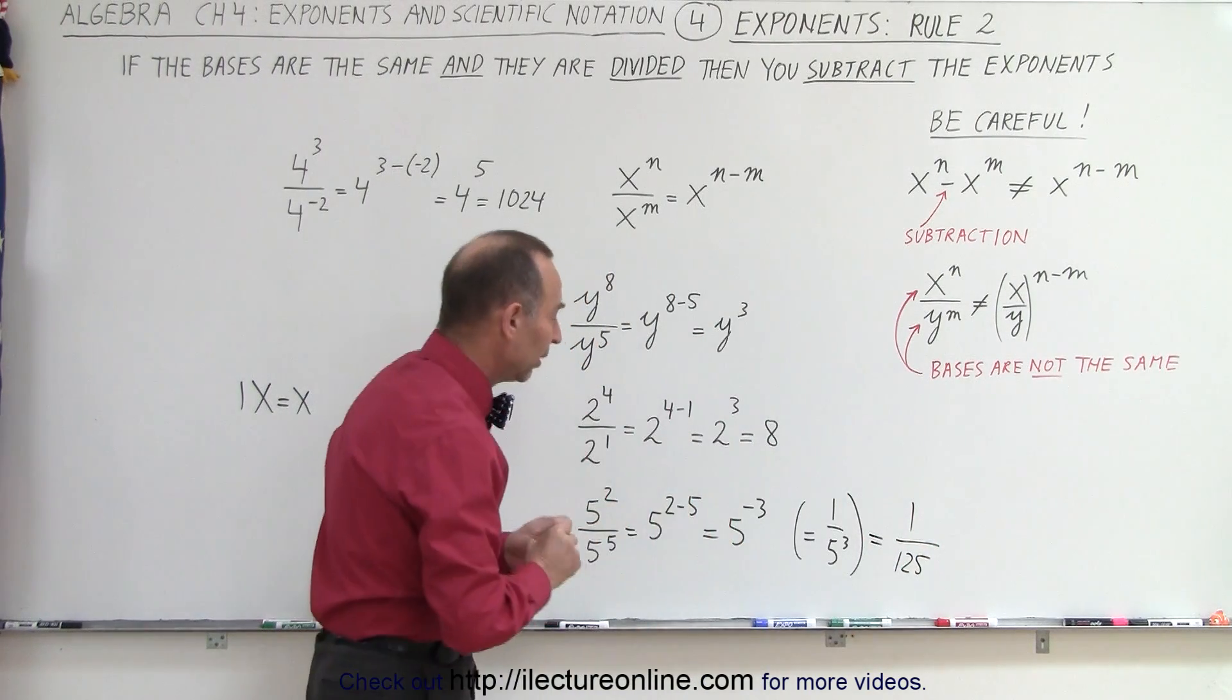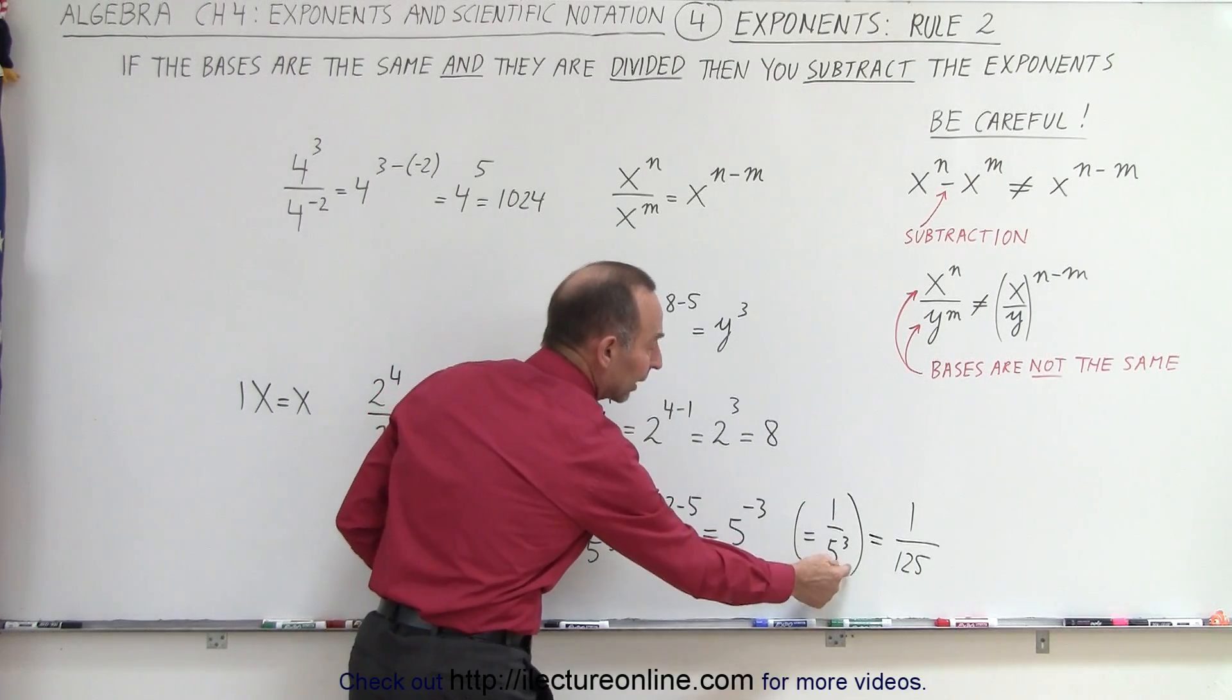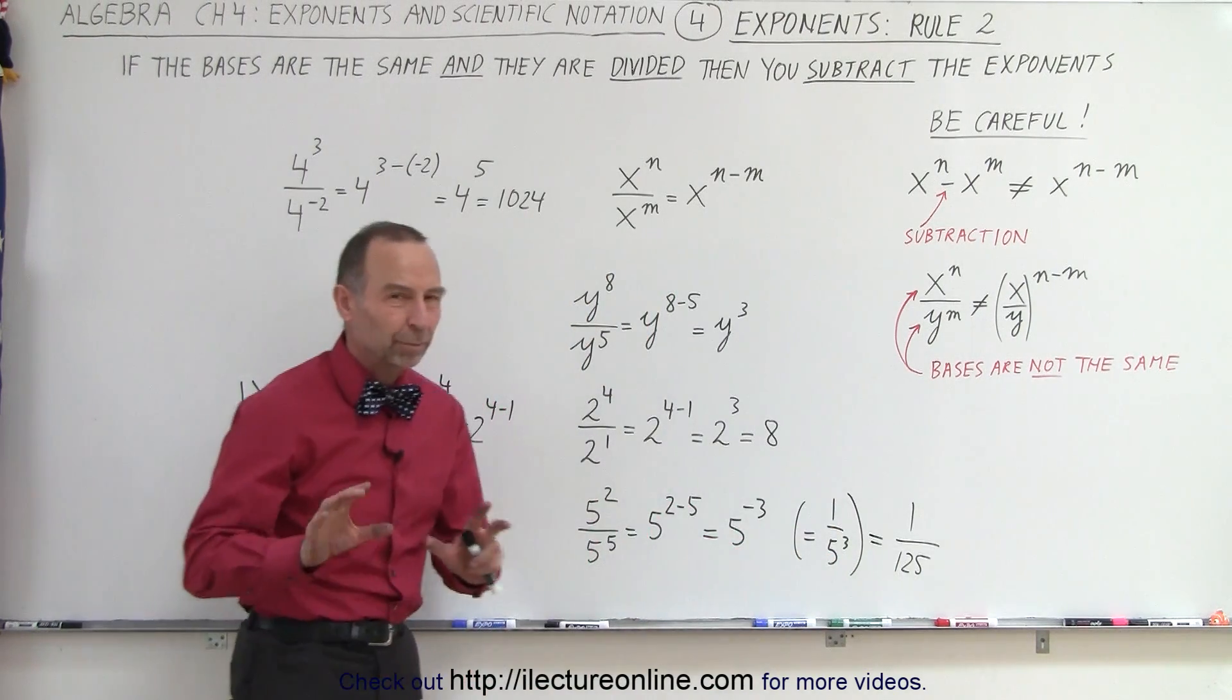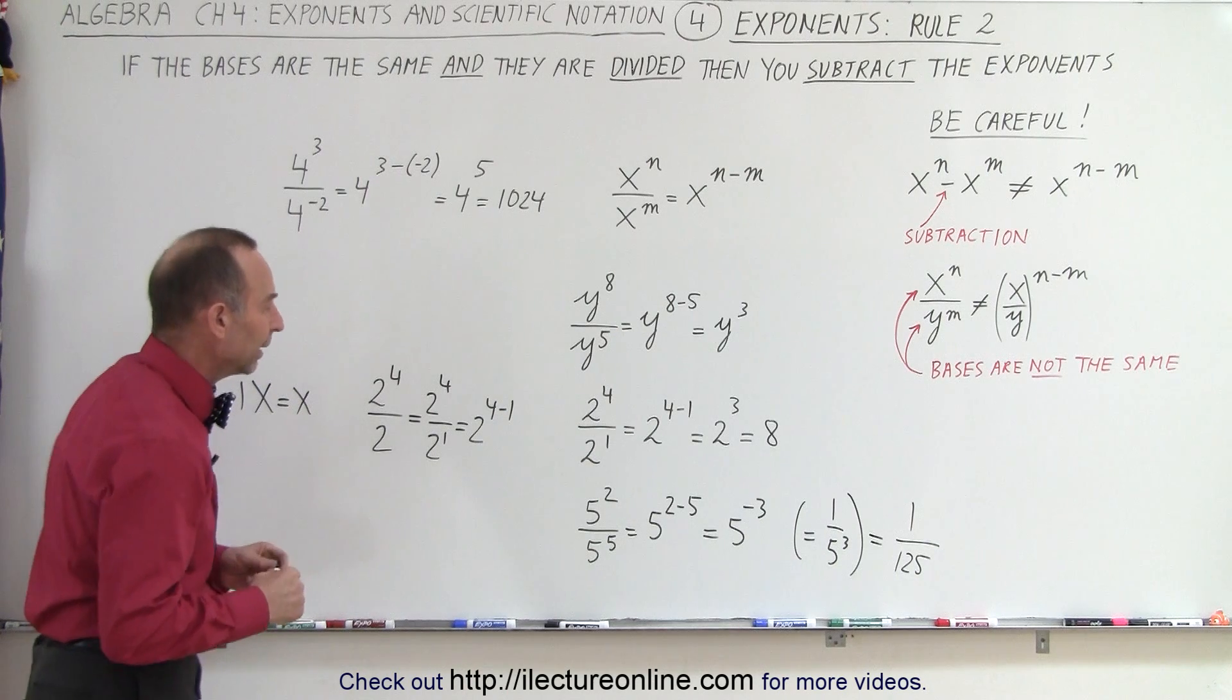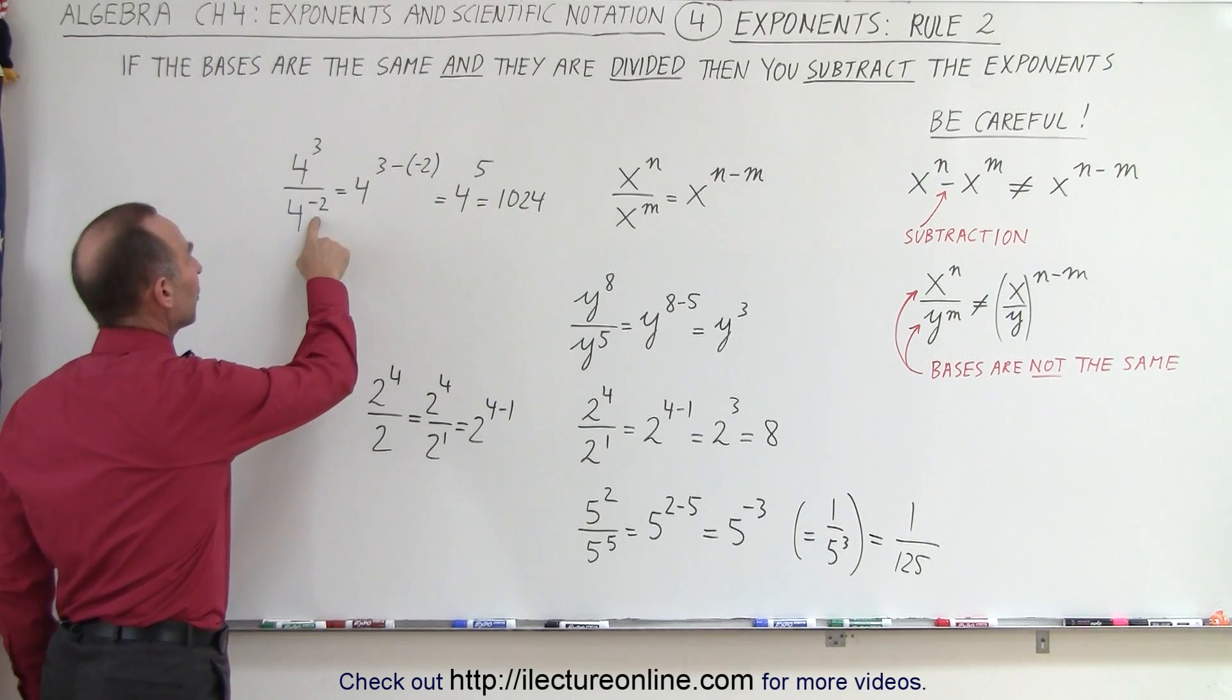So notice the rule is still the same. You end up with a negative exponent, then you can write it like a positive exponent like this. And we'll explain that rule in more detail in a later video. And then here's another example. What if you have a negative number in the denominator?